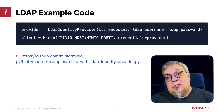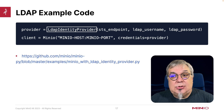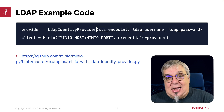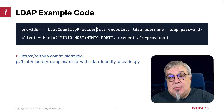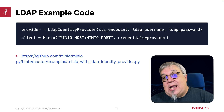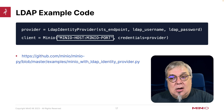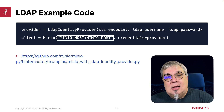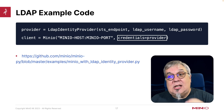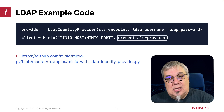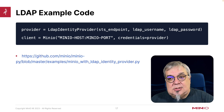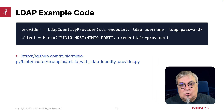Here's a little LDAP example code. You can see we're using the LDAP identity provider class, handing it the STS endpoint — which again is going to be MinIO — and then the LDAP username and password. Once we have that, when we create the client we're going to use the MinIO host, the MinIO port, and instead of giving it a secret key and access key, we're going to give it just these credentials. There's a great example piece of code on GitHub — the link is in the description below.